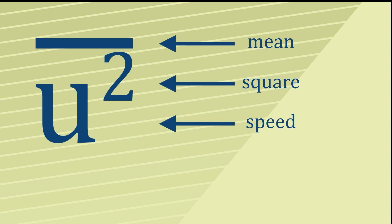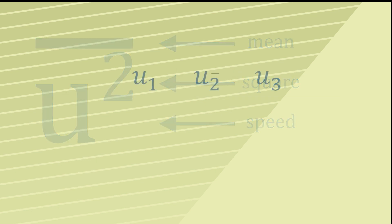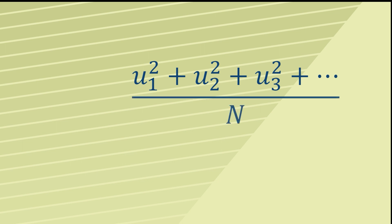This mean square speed is worked out by taking all the speeds, squaring them, adding them up, and then dividing by N, where N is the number of particles. In other words, it's just the mean of all the speeds squared.